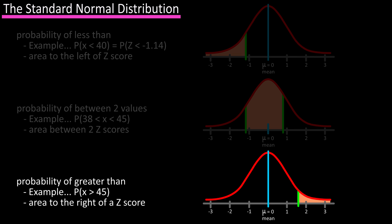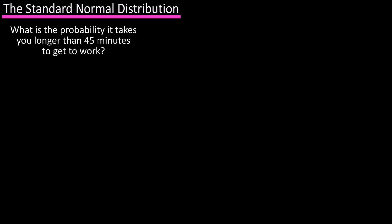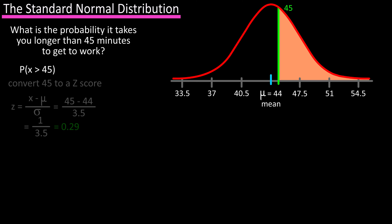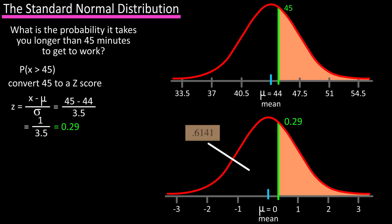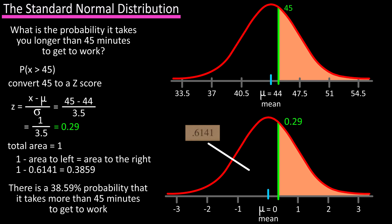The last way we can use the standard normal distribution and z-scores is to find the probability of something greater than a value. What is the probability that it takes you longer than 45 minutes to get to work? On the normal distribution graph, we're looking for this area here to the right of the line. From our last problem, we know the z-score for 45 minutes is 0.29, and from the table, the area to the left is 0.6141. Since the entire area under the curve equals 1, we subtract: 1 minus 0.6141 equals 0.3859. So there's a 38.59% probability that it takes you longer than 45 minutes to get to work.